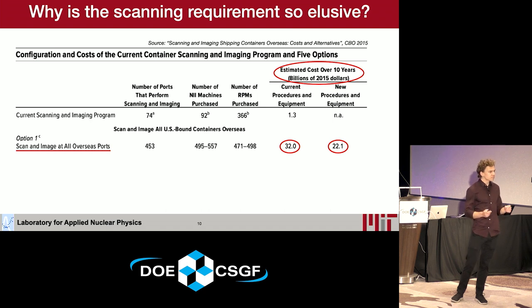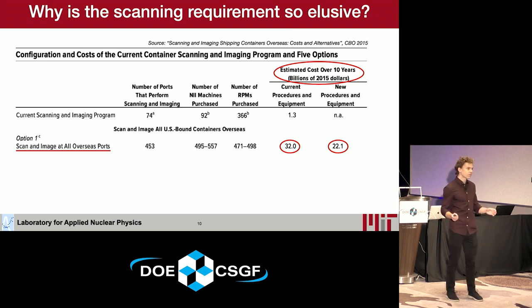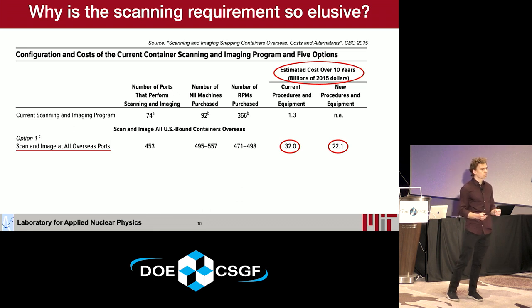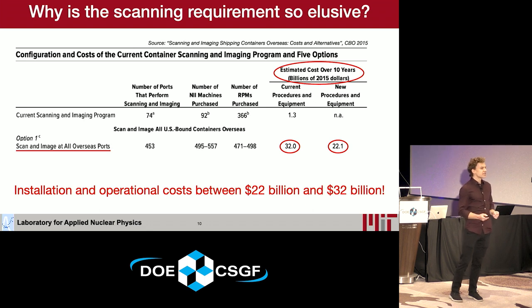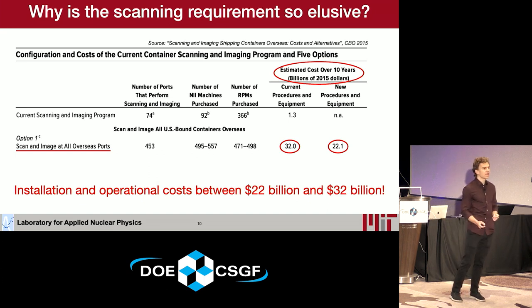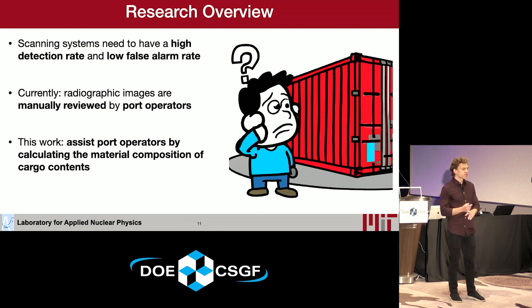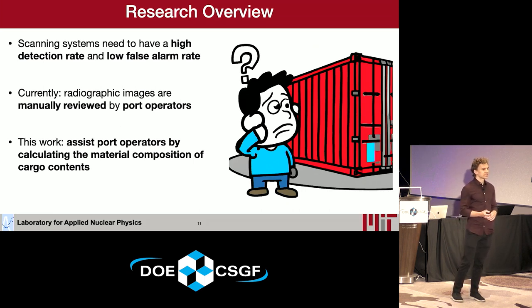So 17 years since the Safe Port Act was initially passed, we still are not at the goal of 100% scanning of U.S.-bound cargo containers prior to U.S. entry. Why is this requirement so elusive? In 2015, the Congressional Budget Office put out a report asking how expensive it would be to equip 453 ports around the world with the required scanning technology. They found installation and operational costs would be in the range of $22 to $32 billion.